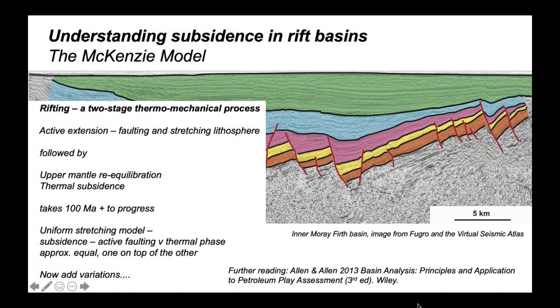That's a brief introduction to the McKenzie model. To summarize: rifting is a two-stage thermomechanical process. It starts with active extension, accommodated by faulting and stretching of the lithosphere, followed by thermal re-equilibration of the upper mantle which drives subsidence. We call this thermal subsidence.